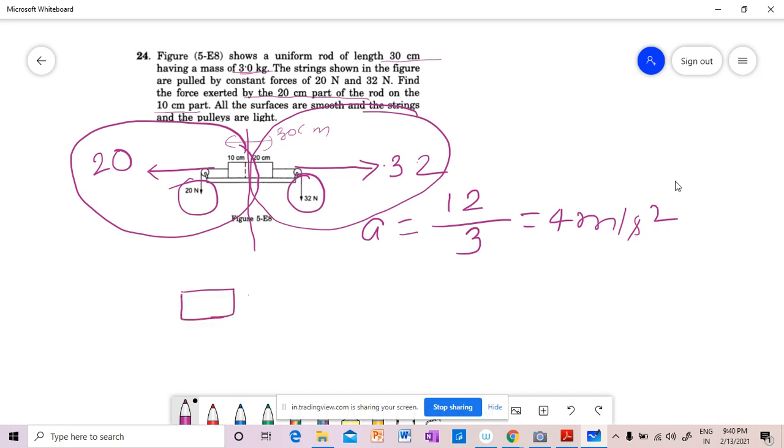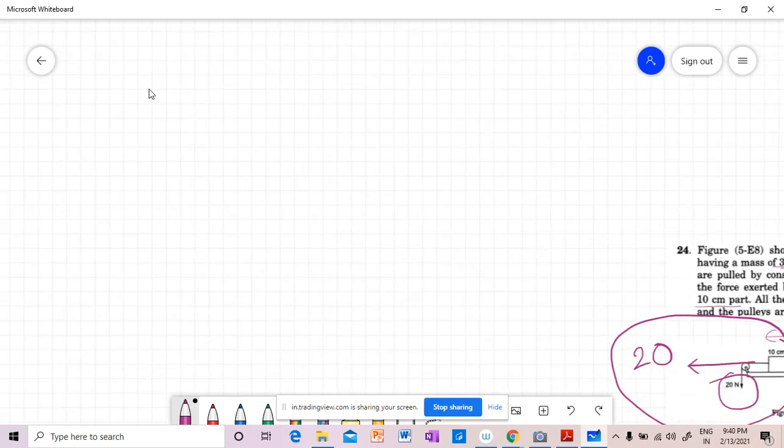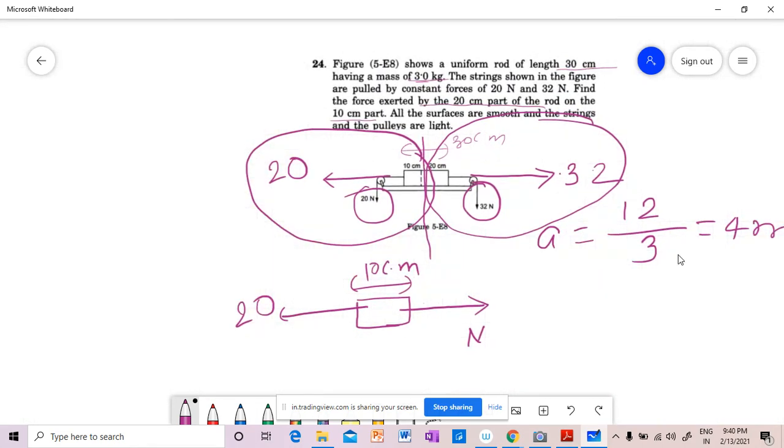Obviously the right side, the system is moving right. Now we have to take the whole system. The whole system accelerates right side. The whole system right side accelerate, that means 10 cm part right side accelerate. Accelerate means 20 N to your left side, obviously right side force plus a force N.